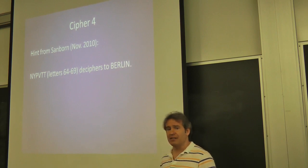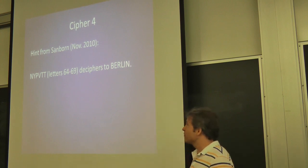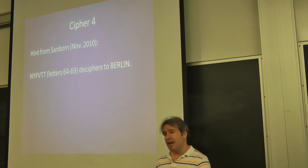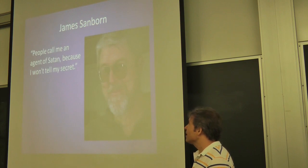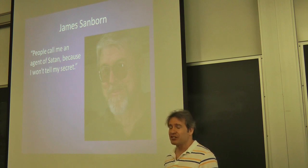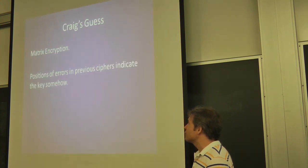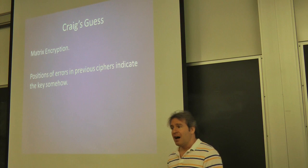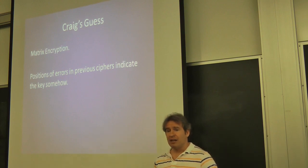Now, in the earlier parts, there's some typos. And Gillogly has indicated that the typos were intentional in most cases and that they mean something. So here's my theory for that fourth part. He shifted from something kind of like a Vigenère to transposition. I think the fourth part is another shift. He says, people call me an agent of Satan because I won't tell my secret. A lot of attention, especially since Dan Brown's talking about it. So a lot of people that are not necessarily of a mathematical background that are intrigued.